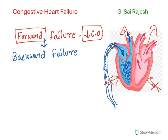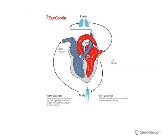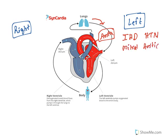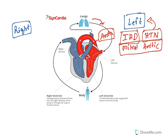Heart failure could occur on the left side or the right side of the heart. As you can see in the diagram, oxygenated blood comes from the lungs and enters the left atrium, then falls into the left ventricle, goes to the aorta, and is supplied to the entire body. Left ventricular failure can occur due to ischemic heart disease, hypertension, or problems in the mitral valve and aortic valve. When there is a problem in these valves, or due to ischemia or hypertension, left ventricular failure occurs.